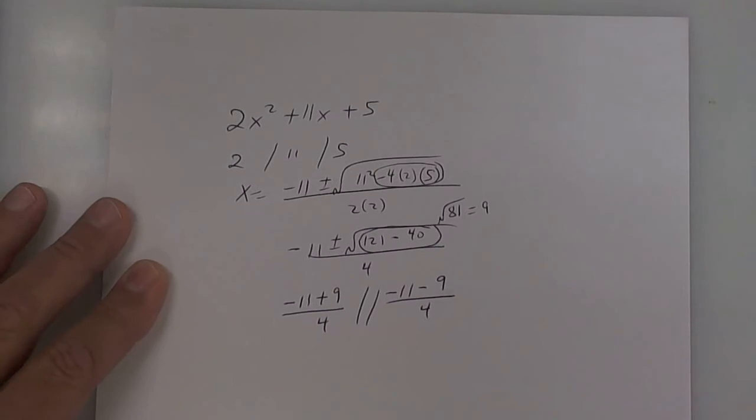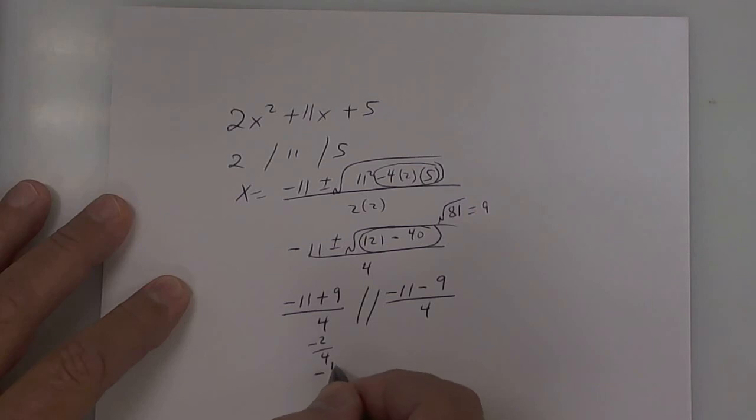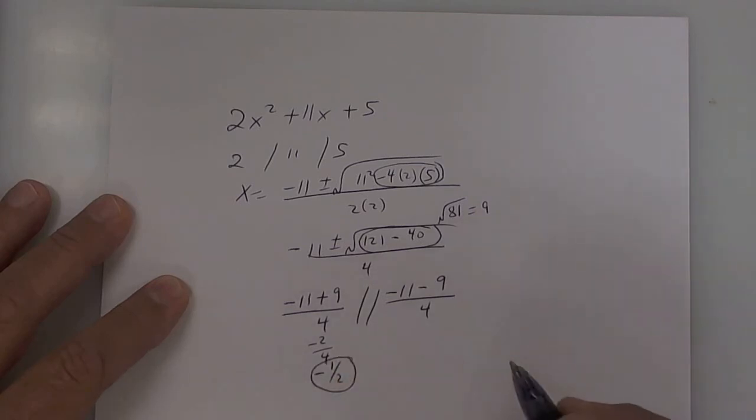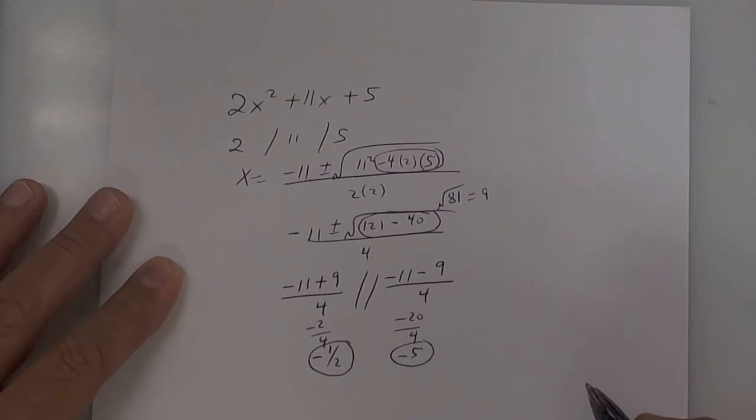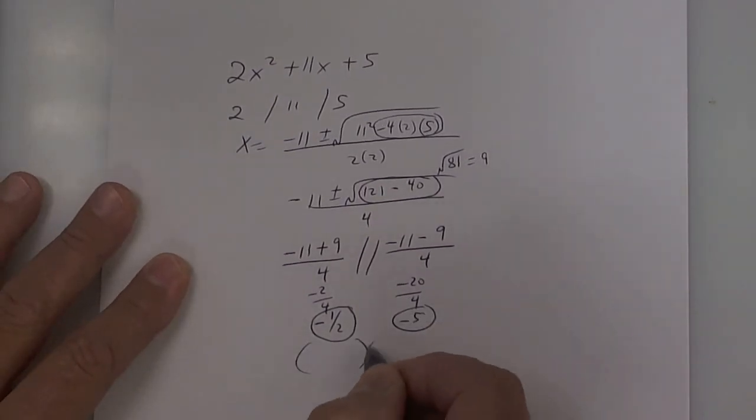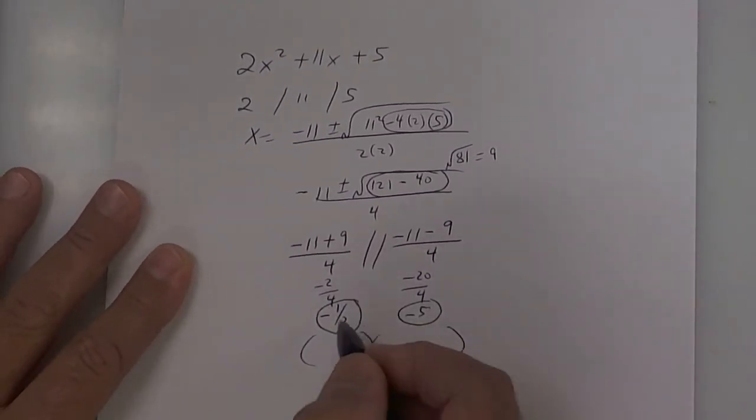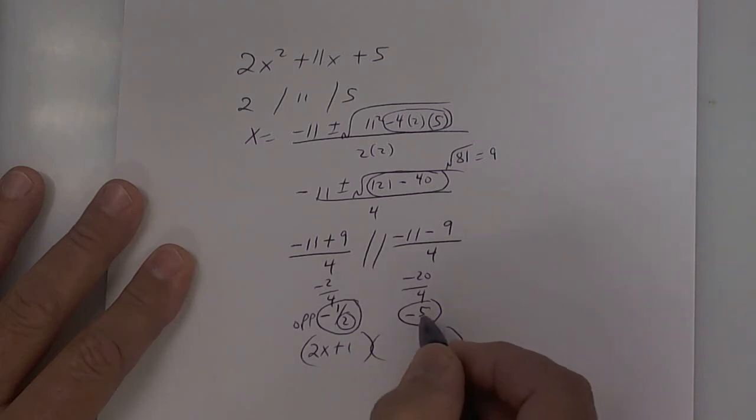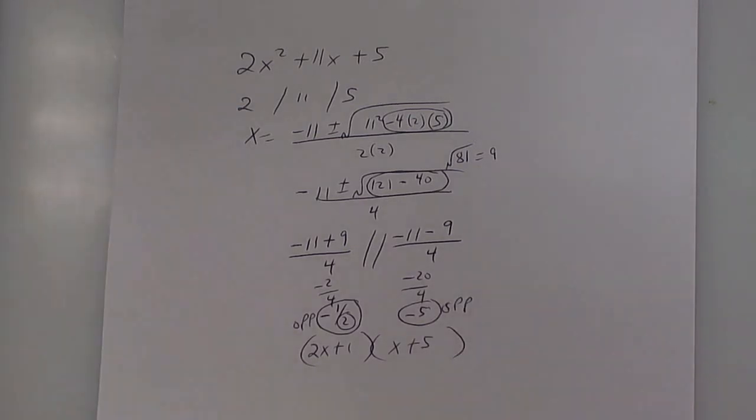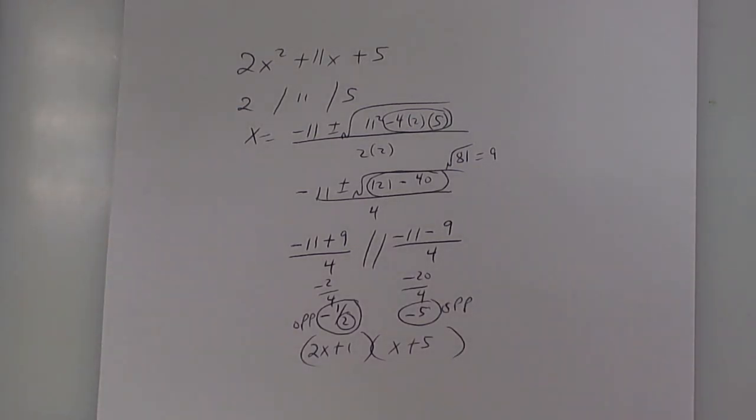We're almost done. This right here, that's going to be a negative 2 over 4, which reduces to a negative 1 half. So that's one answer. This right here is going to be a negative 20 over 4, which reduces to a negative 5. 4 goes into 20 five times. So to write your answer on today's work, remember the bottom number goes in front. So it's going to be 2x, and then you've got to do the opposite, plus 1. And then this one, the opposite, is going to be x plus 5. And that should be the answer for that problem.